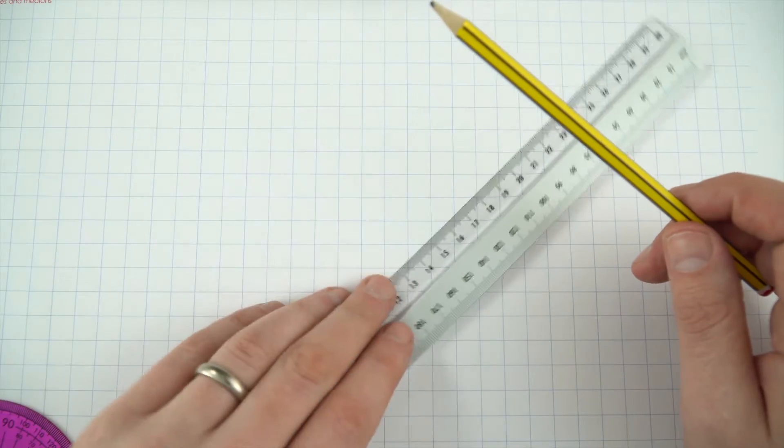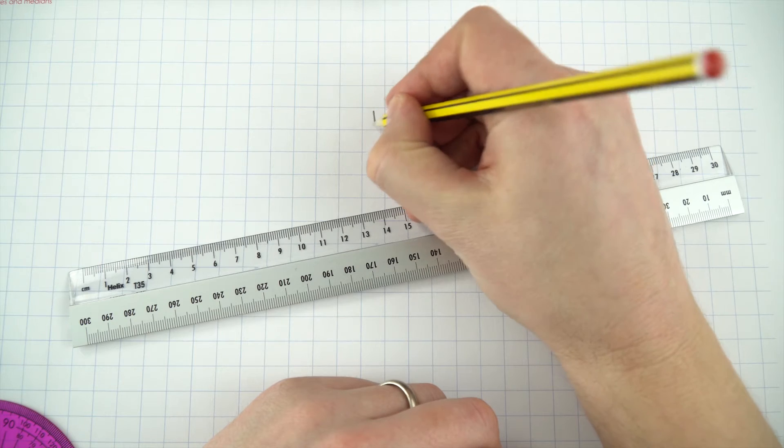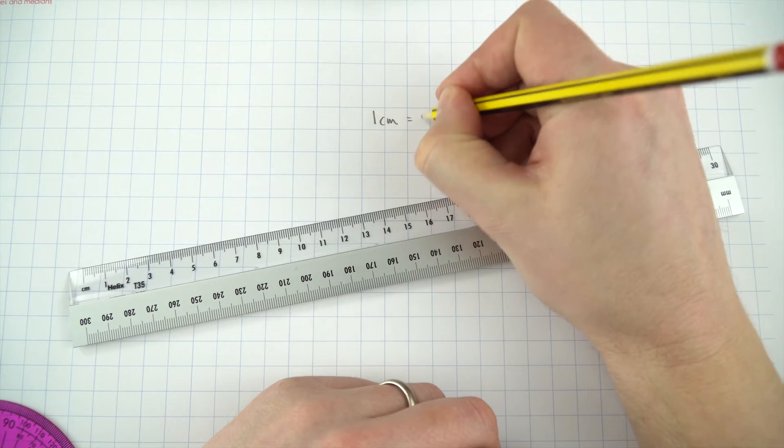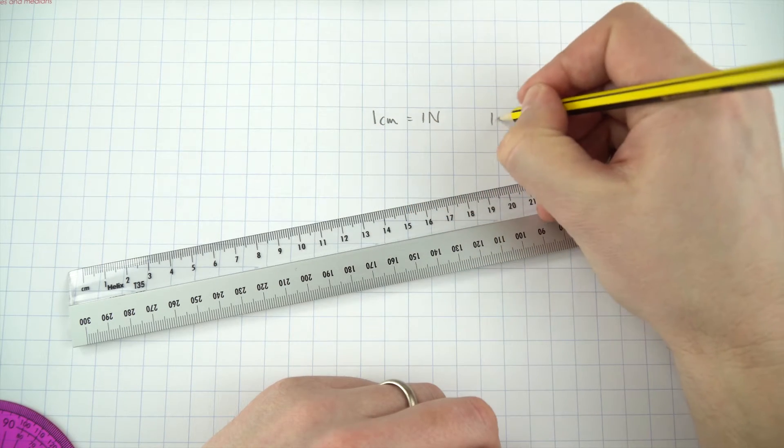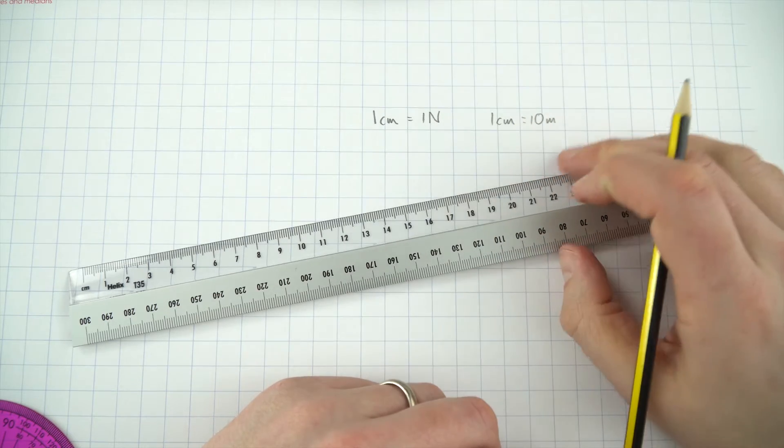Now when it comes to these scale drawings you've got to think about the scale that you're going to use. It might be that you decide that one centimeter represents one newton, or perhaps one centimeter might be equal to 10 meters. It really depends upon the question that you're doing.